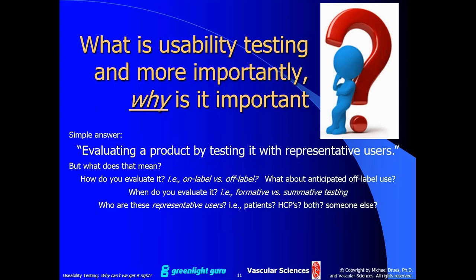So who are these representative users? In some cases, they might be patients; in others, healthcare providers — a physician, surgeon, nurse, or pharmacist; in some cases, both. Statistics 101 says your sample has to be representative of your population. If your device is intended to be used by a certain population, whether patients or caregivers, your usability study has to include people representative of that population.